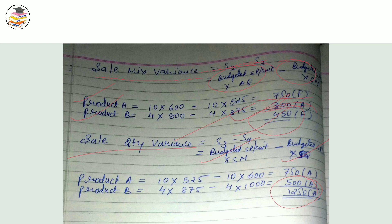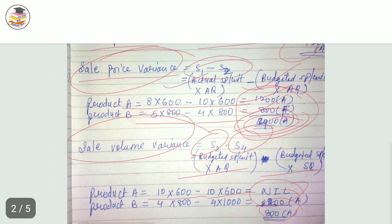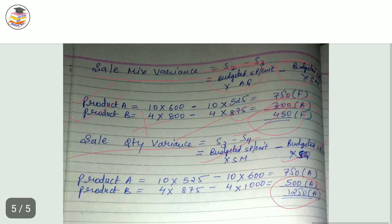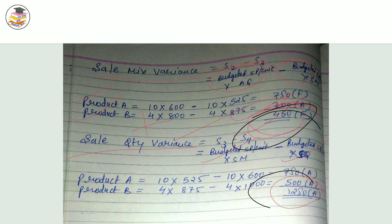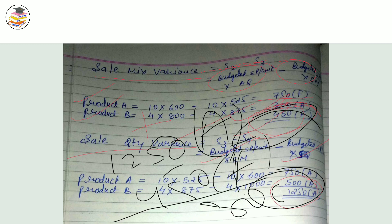Check: sale mix variance plus sale quantity variance should equal sale volume variance, which is 800 adverse. Sale mix variance is 450 favorable, sale quantity variance is 1250 adverse — combining these gives 800 adverse, which matches the sale volume variance. The answer is verified as correct. That is how you complete the sale variance question.